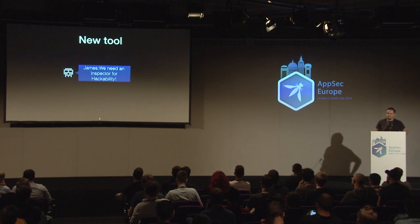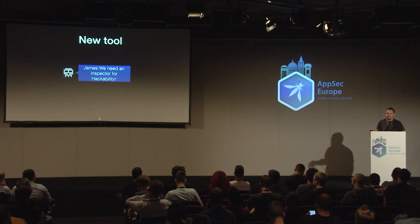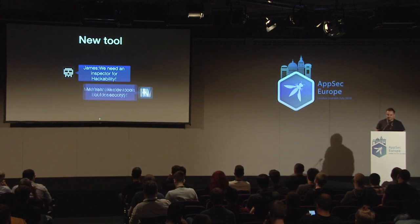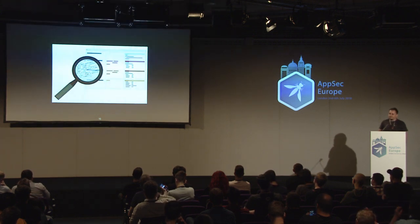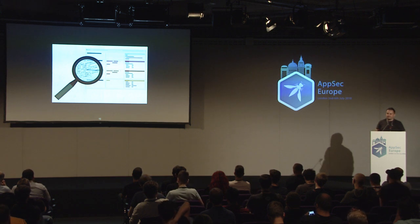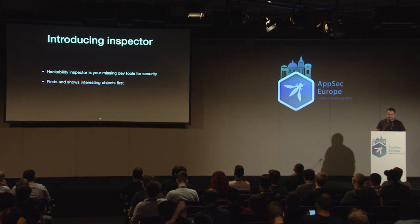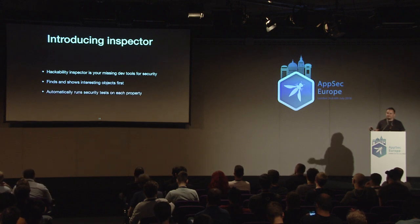James was using my tool HackVerter, which has an inspector, and he said we need an inspector for Hackability — because we know these objects have been detected, but we have no means to inspect them when we're in a browser without DevTools, just rendering a page, sometimes not even allowing interaction. So I said we need something like DevTools, but for security. The inspector was born — basically taking a magnifying glass and looking at objects. It's your missing tool for security. It finds and shows the most interesting stuff first, such as a developer-defined custom object like a Java bridge.